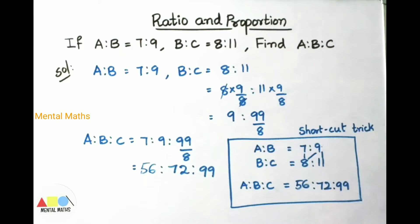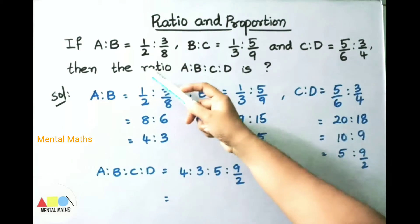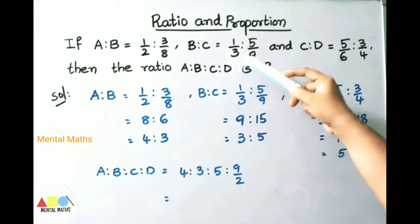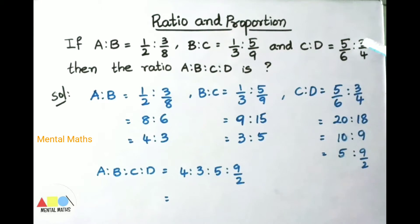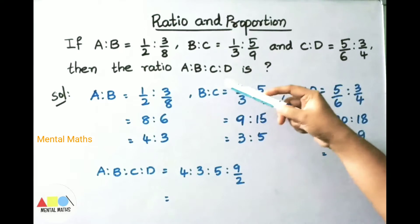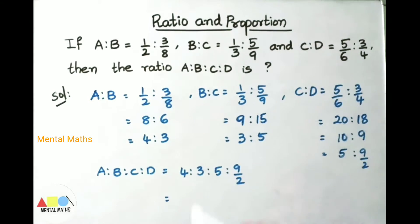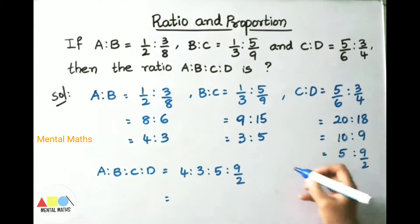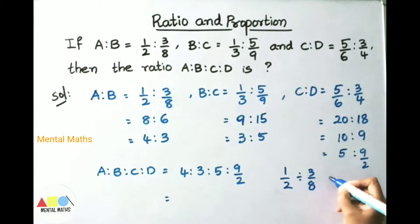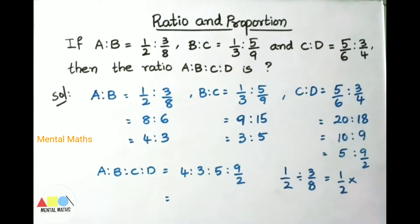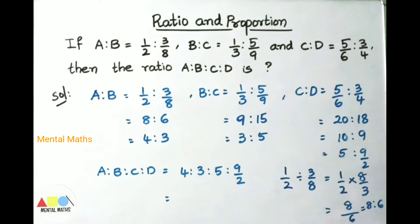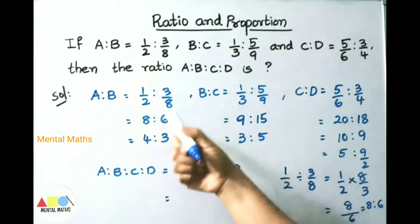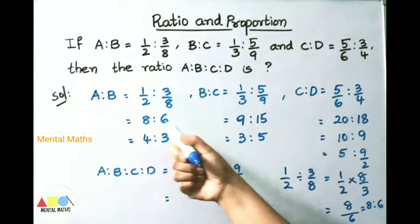If A is to B is 1/2 is to 3/8, B is to C is 1/3 is to 5/9, and C is to D is 5/6 is to 3/4, then find the ratio A is to B is to C is to D. For A is to B: 1/2 divided by 3/8 equals 1/2 multiplied by 8/3. Numerator 1 into 8 is 8, denominator 2 into 3 is 6. So by cross multiplication, 1 times 8 is 8 and 2 times 3 is 6. A is to B means 8 is to 6.